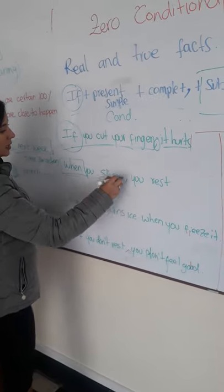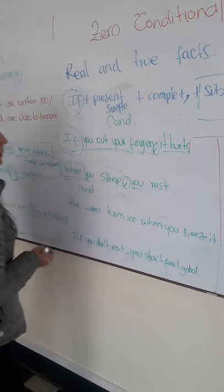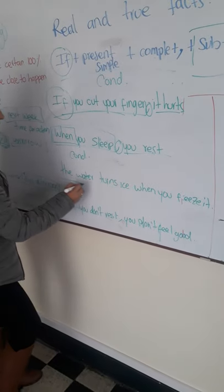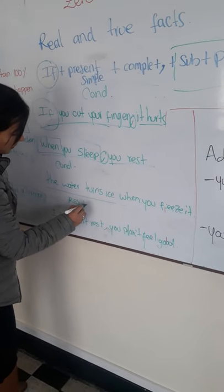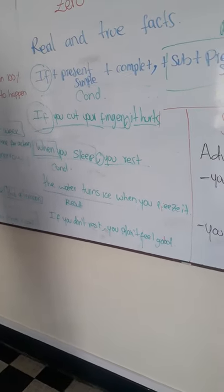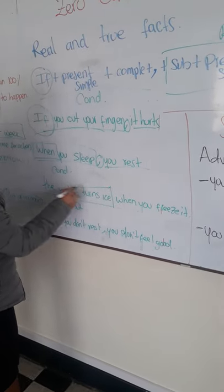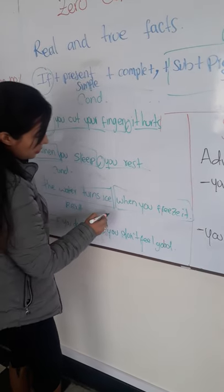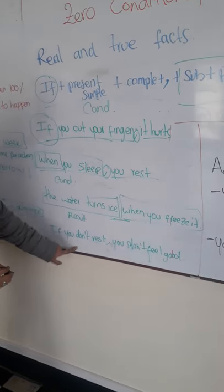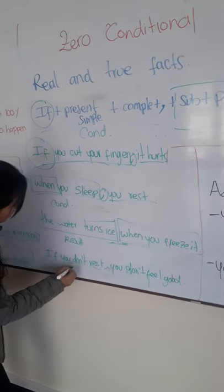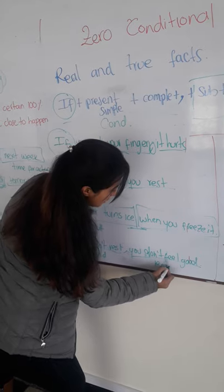When you use this, you can use the condition. You can use the code. But if we use the result, for example this one — this is the result. The water turns high when it breaks. So here we have first the result, and this is the condition. We don't use code — it is not important. And if you press, this is our condition. You don't feel good — that's the result.